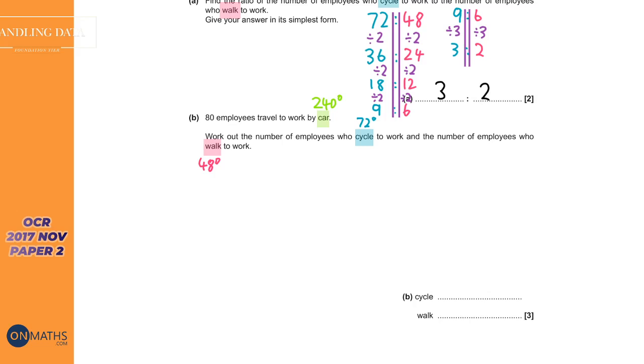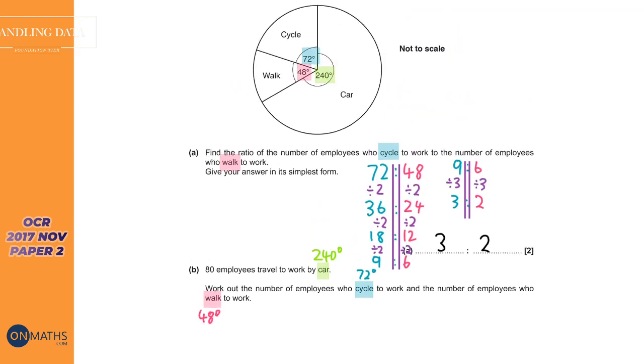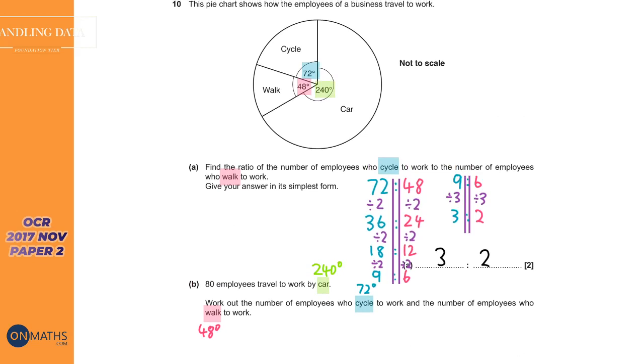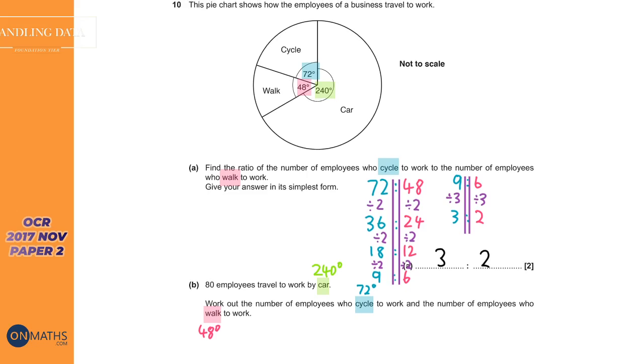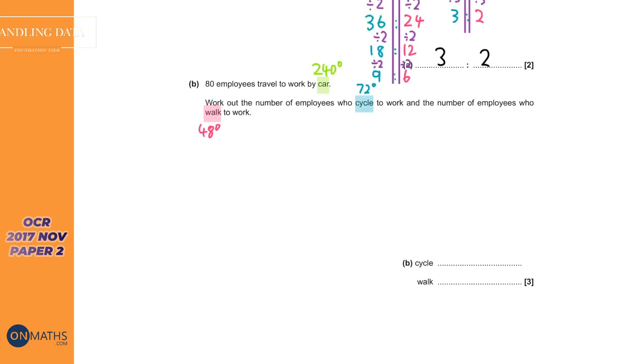So the first thing to realise is that a pie chart just shows proportions, not amounts. So that 240 degrees, it's not giving you an amount. It's just saying out of 360 degrees, 240 degrees were car. So that could be in millions. It could be tens. In fact, in this case, it says 80. So 240 is equivalent to 80. So what we want to start doing is figuring out, so if 240 degrees means 80, how many degrees is each person? So we get that 240 degrees. We divide it by the 80 people that it represents and we can divide the top and bottom by 10. This is on the non-calculator so I've got to do this without a calculator. 24 divided by 8 is going to be 3. So every one person is equal to 3 degrees.